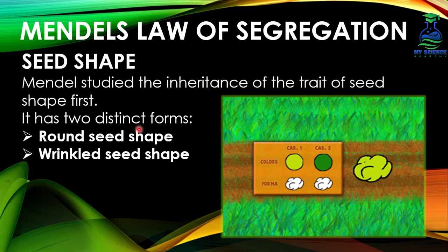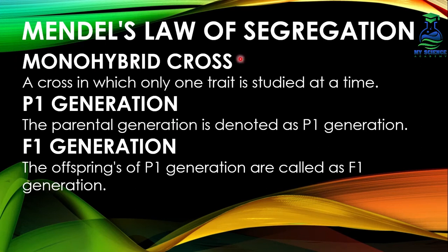Mendel performed experiments on the pea plant to prove his law of segregation. The first trait he studied in the pea plant was seed shape. Mendel studied the inheritance of the trait of seed shape first. It has two distinct forms: number one, round seed shape, and number two, wrinkled seed shape. Mendel used the term monohybrid cross for this experiment.